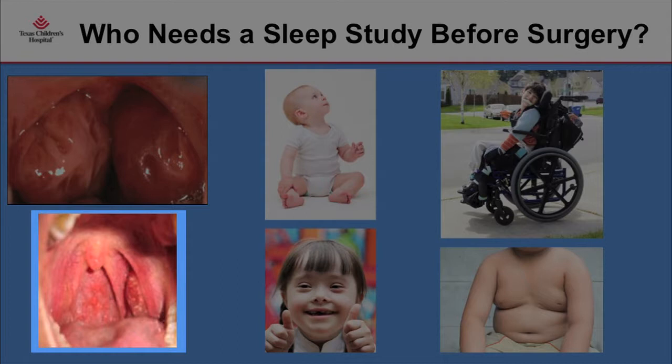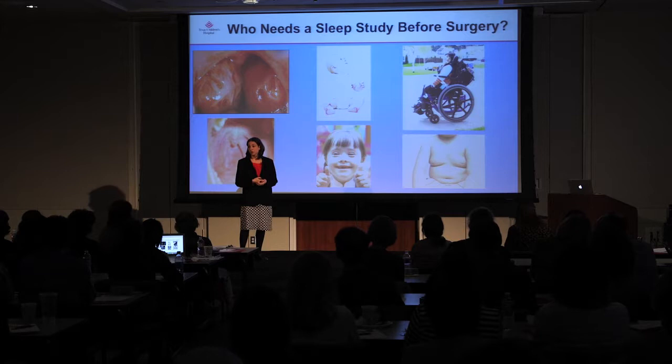The opposite is also true. A child comes in with very small tonsils — you wouldn't expect them to be obstructing — but the parents report behavioral problems in school, tossing and turning, waking up in the middle of the night. Those kids also need a sleep study because there could be a central component, hypotonia, or they could be at more risk of having moderate to severe sleep obstruction.